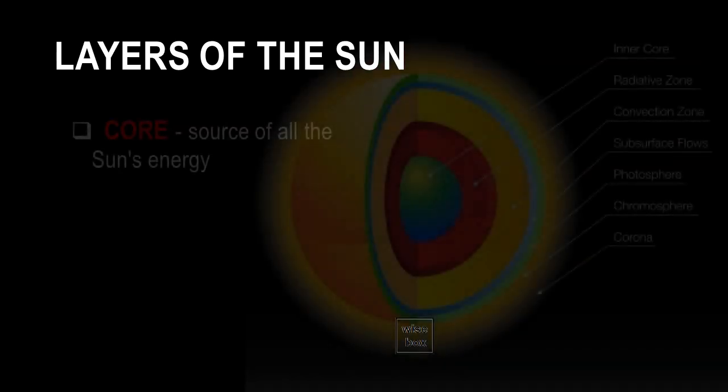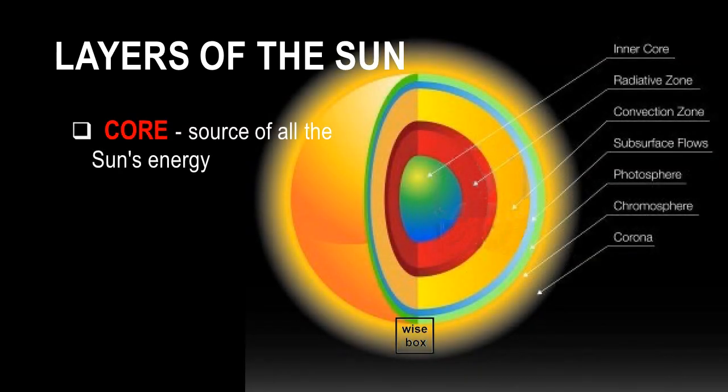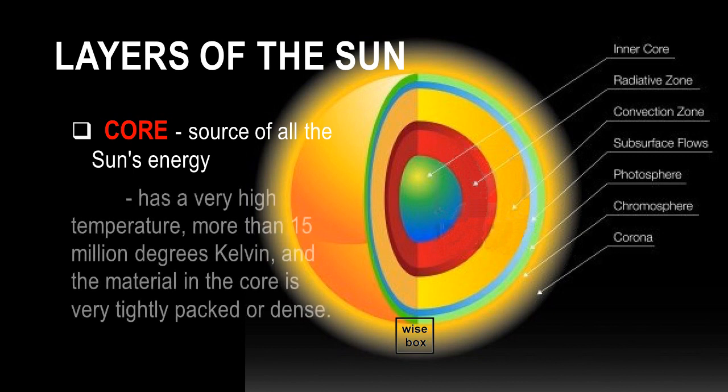The core is the source of all the Sun's energy. It has a very high temperature, more than 15 million degrees Kelvin, and the material in the core is very tightly packed or dense.